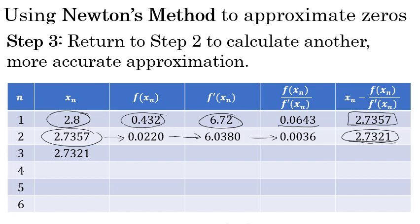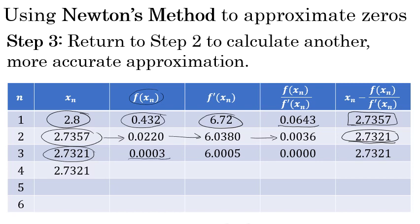Moving ahead and applying Newton's method a third time. Well, when I substitute 2.7321 into the original function, I'll get 0.0003. And when I substitute the third estimate into the derivative, that yields 6.0005. To four decimal places, that quotient is 0.0000. To four decimal places, there's no difference between the third and what would be the fourth approximation of the zero.